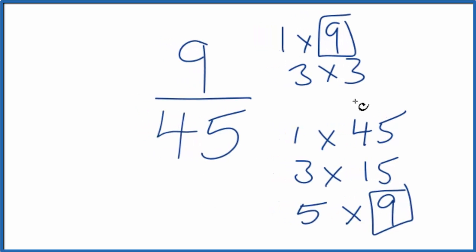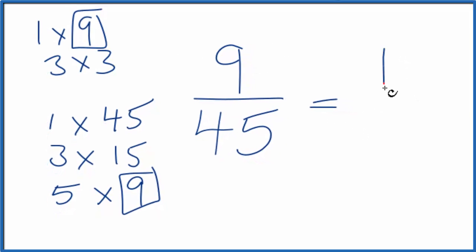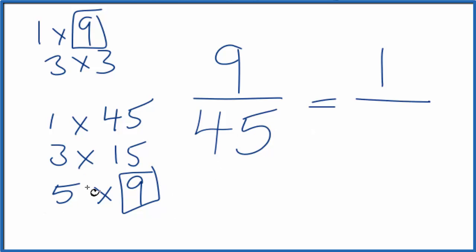So let's move this over here, and now we're going to divide 9 by 9. That gives us 1, and then we'll divide 45 by 9. That gives us 5.